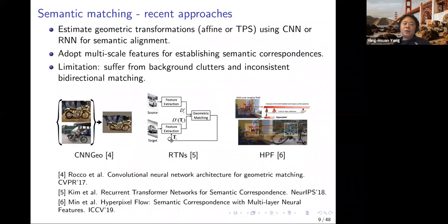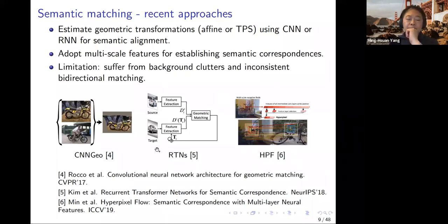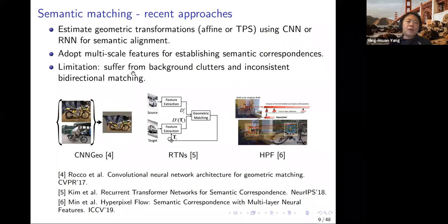Recent methods can learn features and solve matching at the same time, and can also use more powerful transformations such as thin-plate spline for matching, as well as multi-scale features. In this work, we build on top of the work by Rocco, which allows finding matches with large shape or appearance variation. Existing semantic matching methods often don't work well with significant background clutter, and also perform poorly with inconsistent bidirectional matching.